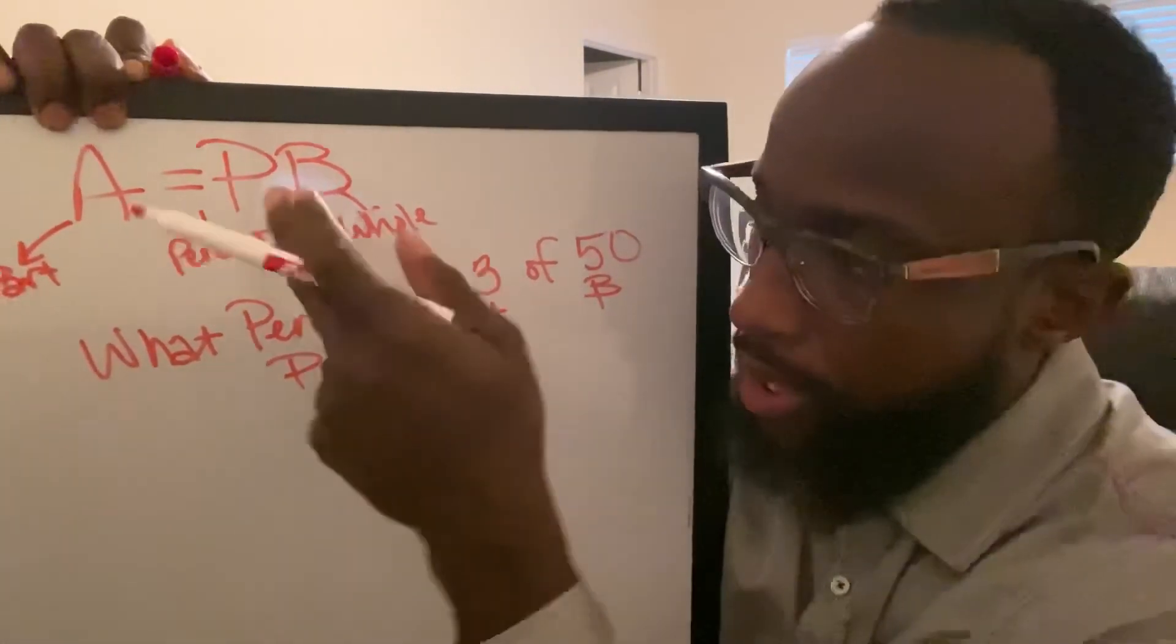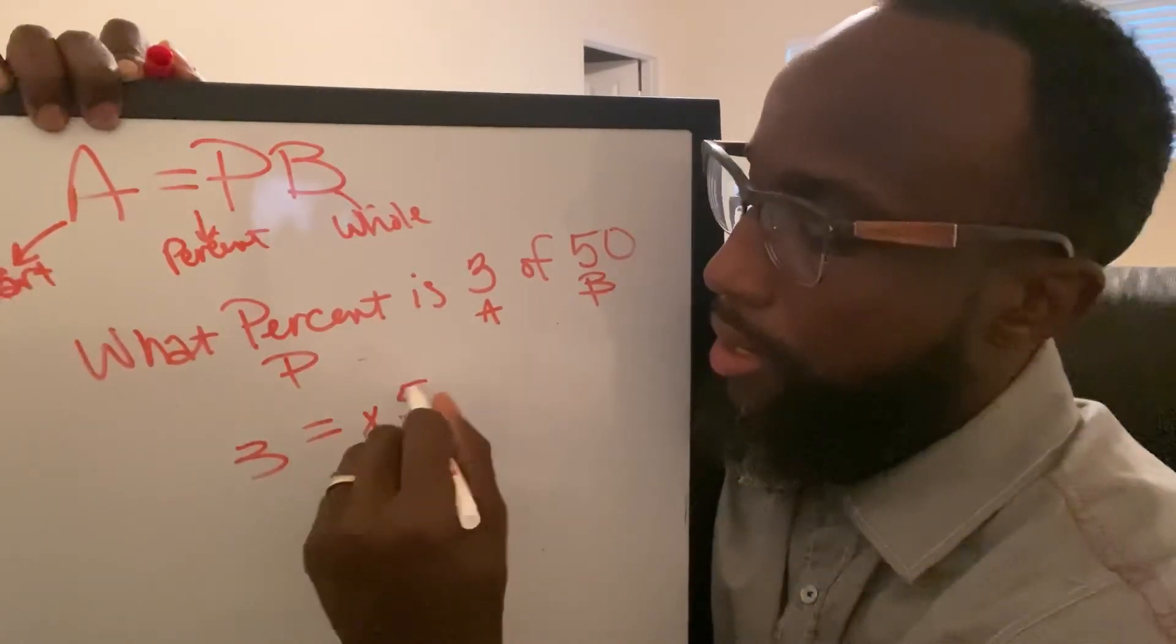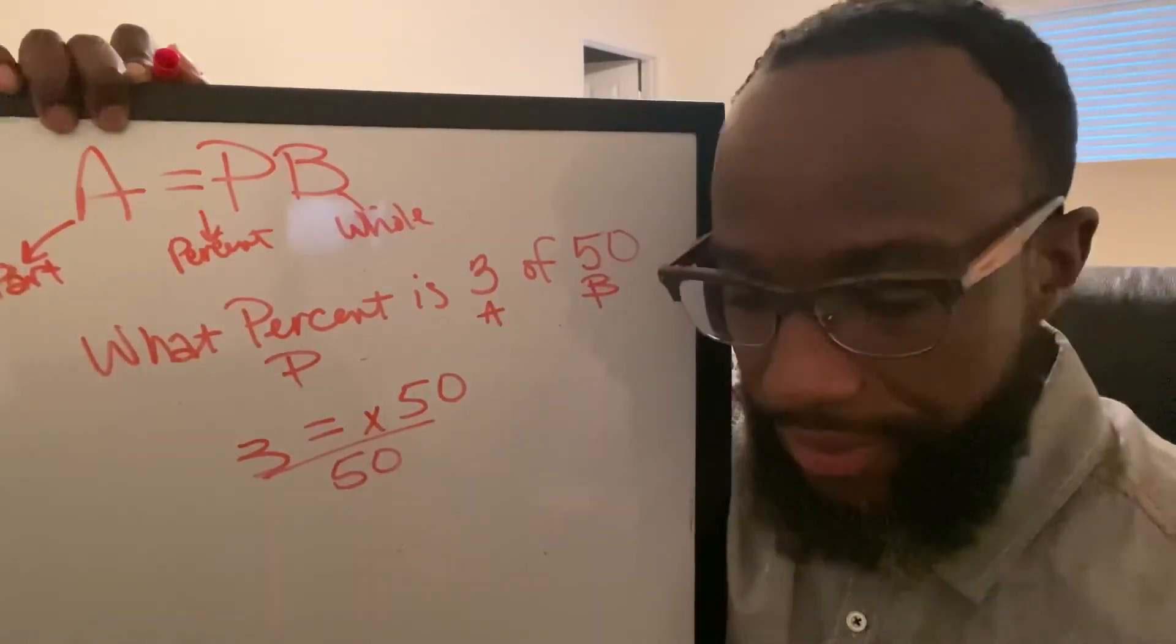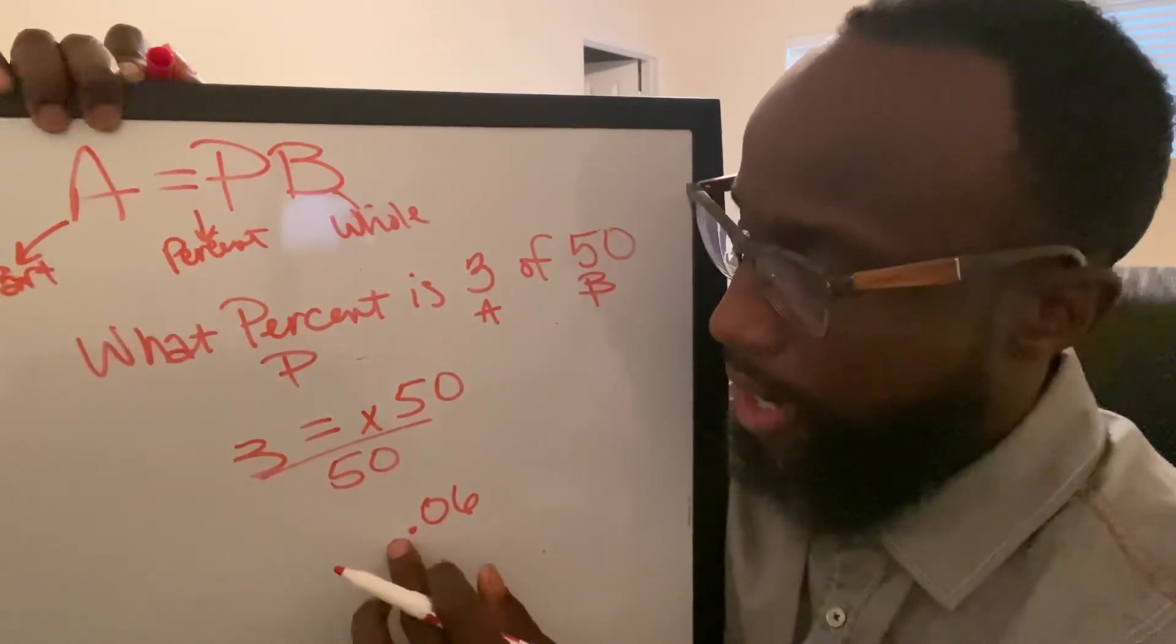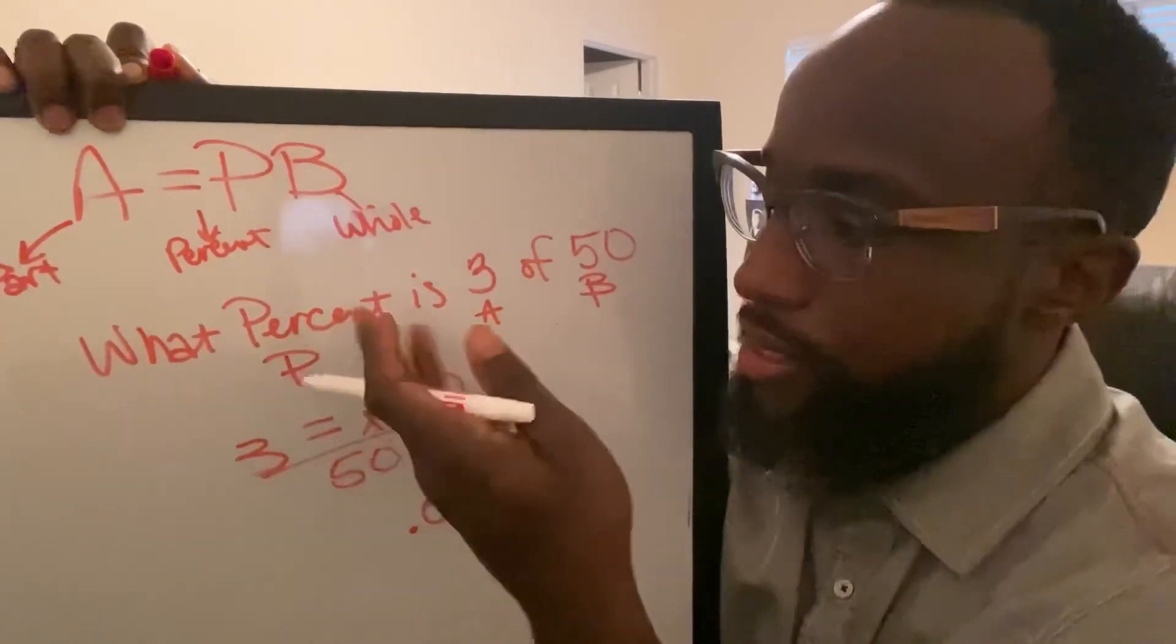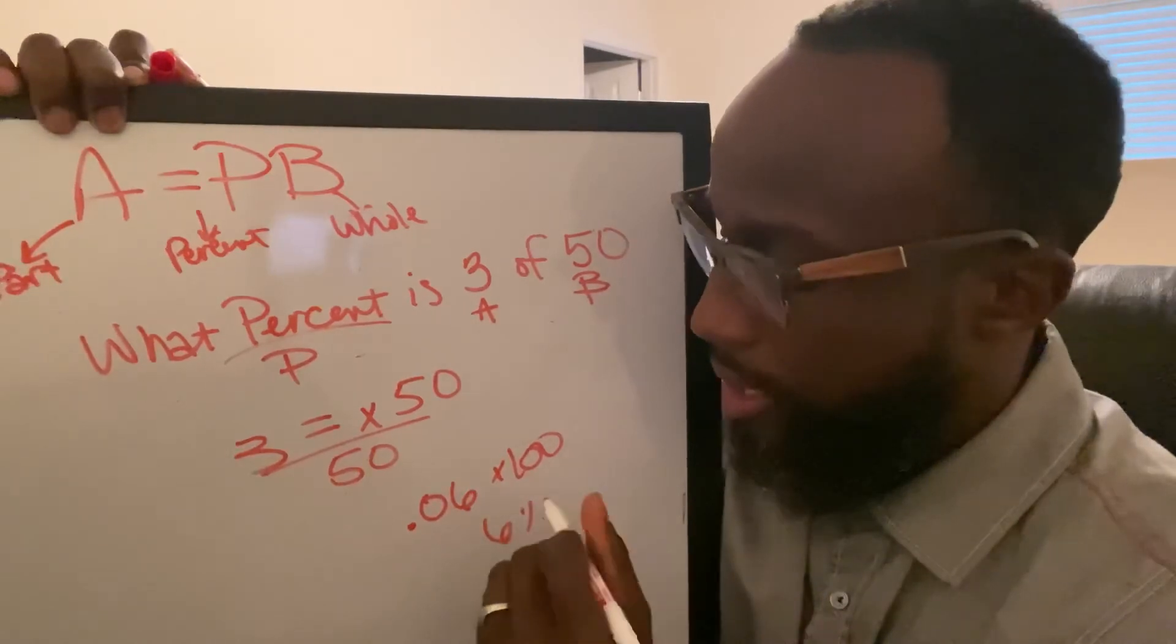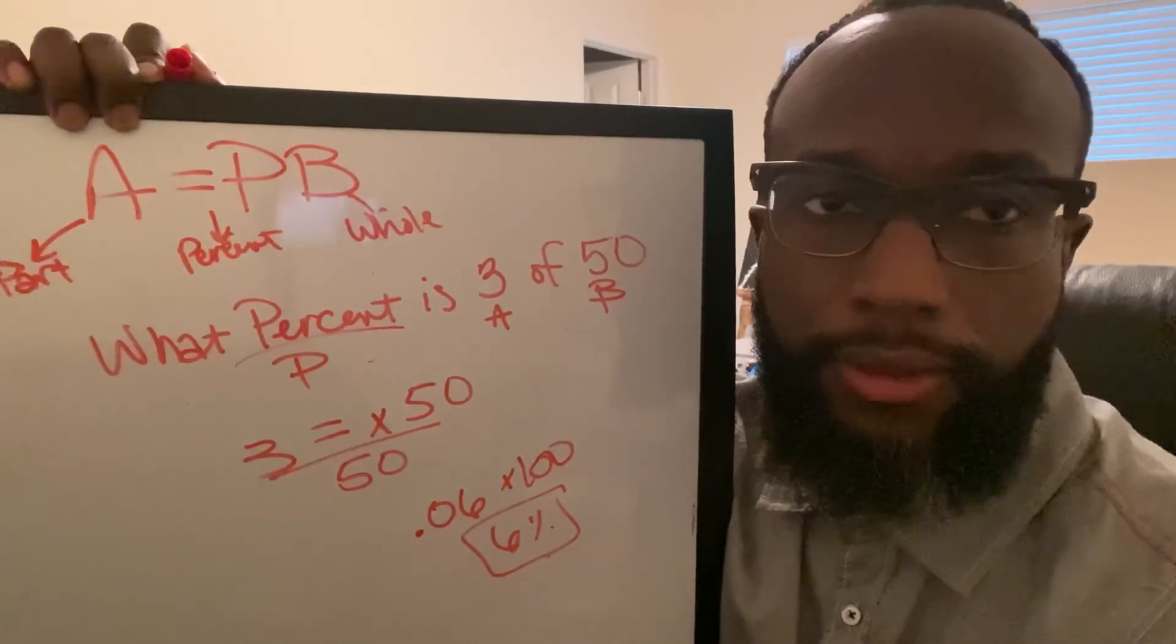Let's put it in our equation. So A equals P times the whole thing. Then from here, we just divide both sides by 50 to solve for X. 3 divided by 50 gives us 0.06. Now we got to convert because this is written in decimal form. We're going to convert this to percent, so we'll multiply that by 100. Multiply that by 100, we get 6%. 3 is 6% of 50.